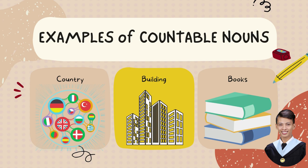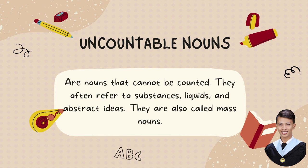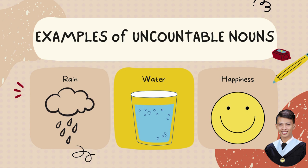Now let's have our next type of noun, which is uncountable nouns. Uncountable nouns are nouns that cannot be counted. They often refer to substances, liquids, and abstract ideas, and are also called mass nouns. Examples are rain and water. You cannot say one rain or two rains — it is not possible. Water is also uncountable; you can say a glass of water, but you're only counting the glass, not the water.